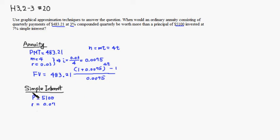Let's look at the simple interest. So future value of simple interest is going to be P, 5,100 times 1 plus rt, so it's going to be 0.07 t. So this is the future value of simple interest. So we want to find the t value so that the future value is bigger than the future value of simple interest.